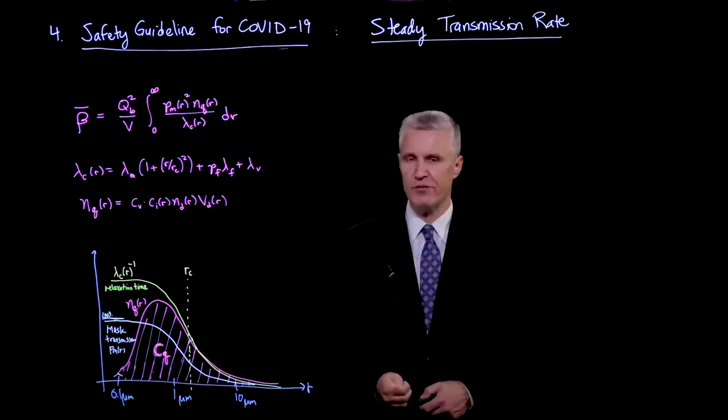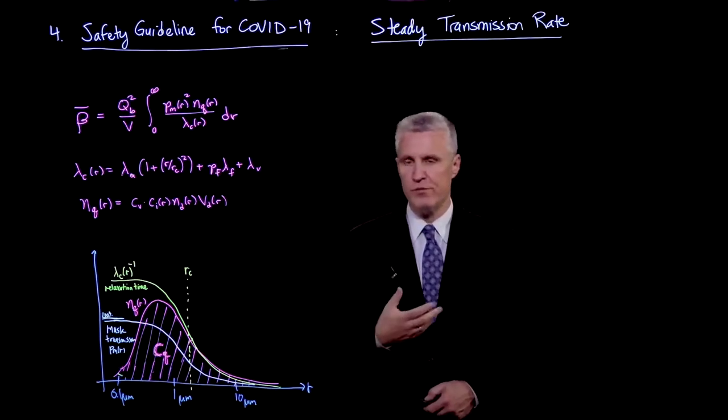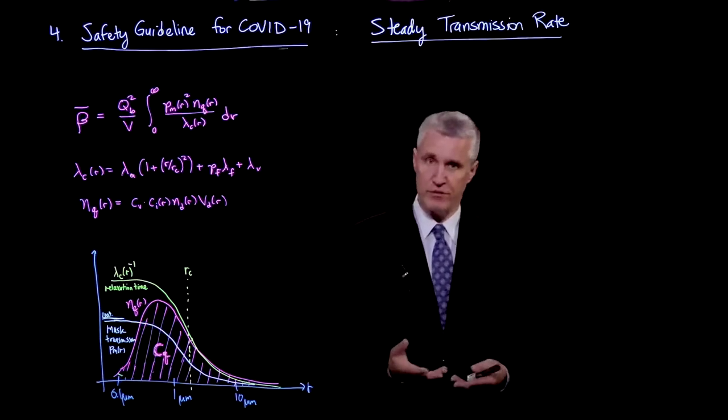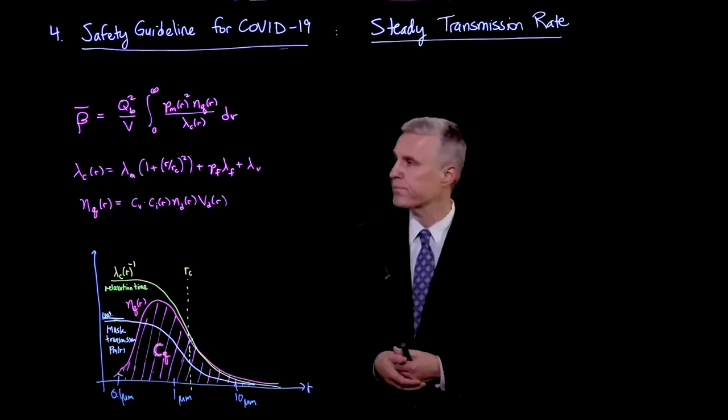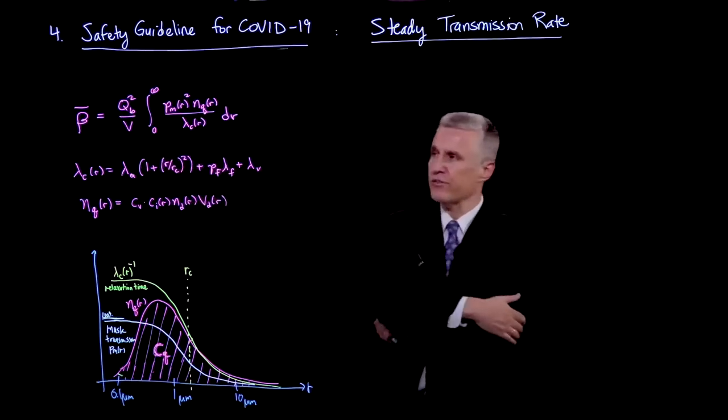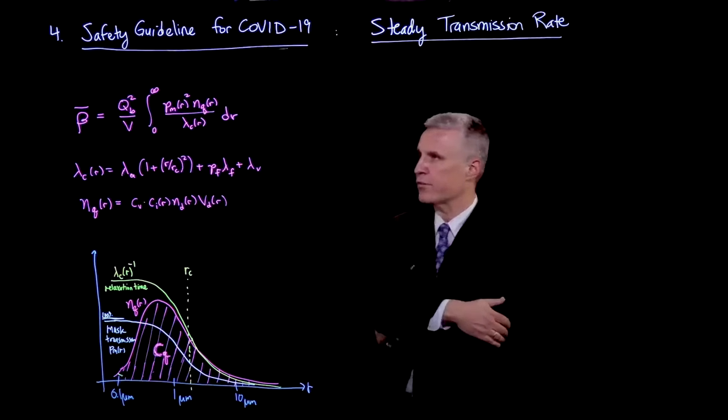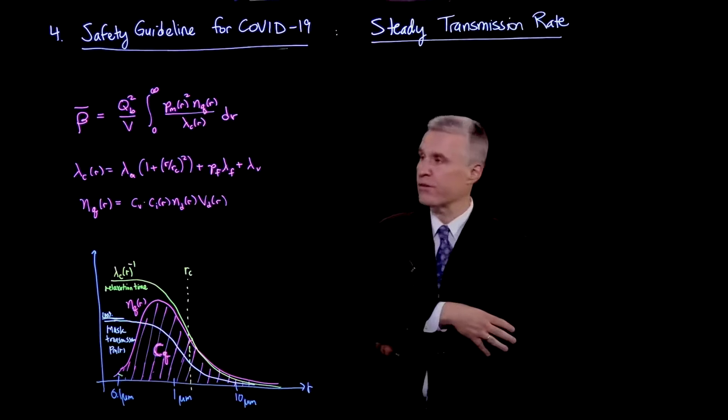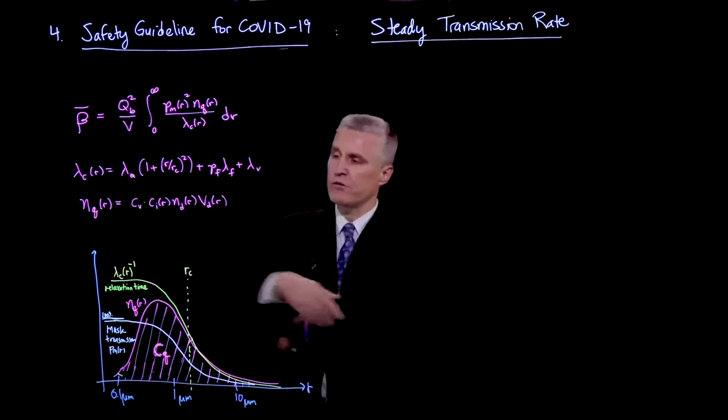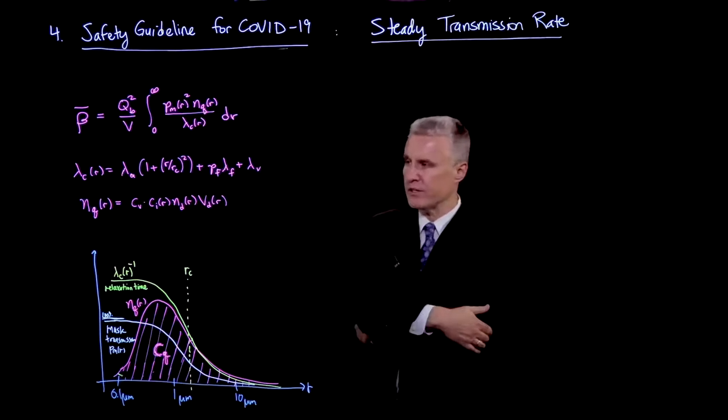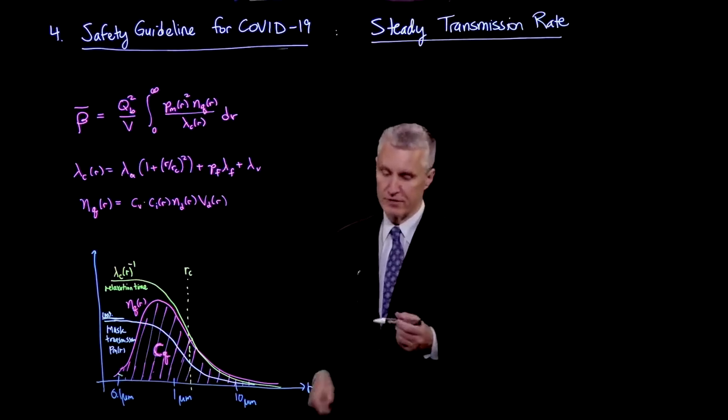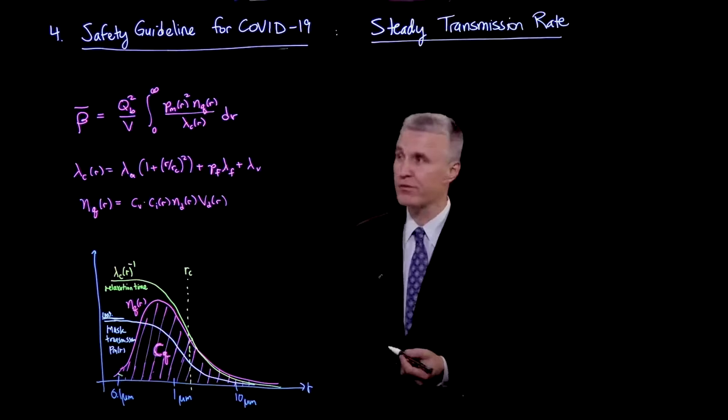Now let's focus on the steady state transmission rate, which is the most useful in designing a safety guideline. It's also the most conservative because the transient transmission rate is always smaller than steady state. Our formula for the steady state transmission rate is shown here in terms of the relaxation rate λc of the aerosol concentration in the air, and also nq of r, which is the density of infection quanta in the air per radius. So let's sketch some of the important functions as a function of radius and try to get a sense of how we can simplify this expression.